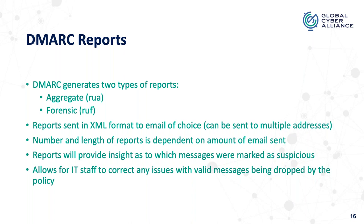The forensic reports or failure reports — RUF — you may or may not get those. There's a privacy concern around them because they show you the actual message headers and message body. The sensitivity around what could be in the message body — PII, health-related information, banking or financial information — is why the majority of organizations do not send RUF reports. We do recommend putting the RUF tag in because you might get one, though the chances are slim. They can provide some level of usefulness, especially at P equals none — you may see if it's a spam message, meaning you need to work harder to get to quarantine or reject. You could also see which specific mechanism — DKIM or SPF — is failing for that message.